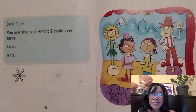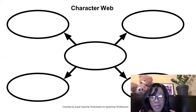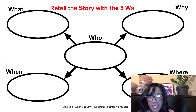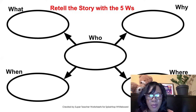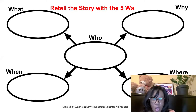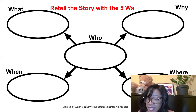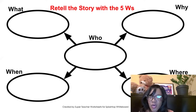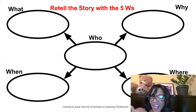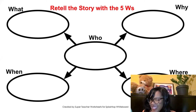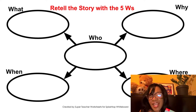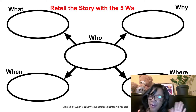This story is now finished — short and sweet! You are going to complete three things: a character map, or character web as some teachers call it; second, retell the story using the five W's — who, what, when, where, why; and last, answer the questions I'm going to add to the end of this video. I really hope you enjoyed the video and this fun little story. Give it a thumbs up, comment below, and please subscribe to the channel. Bye!